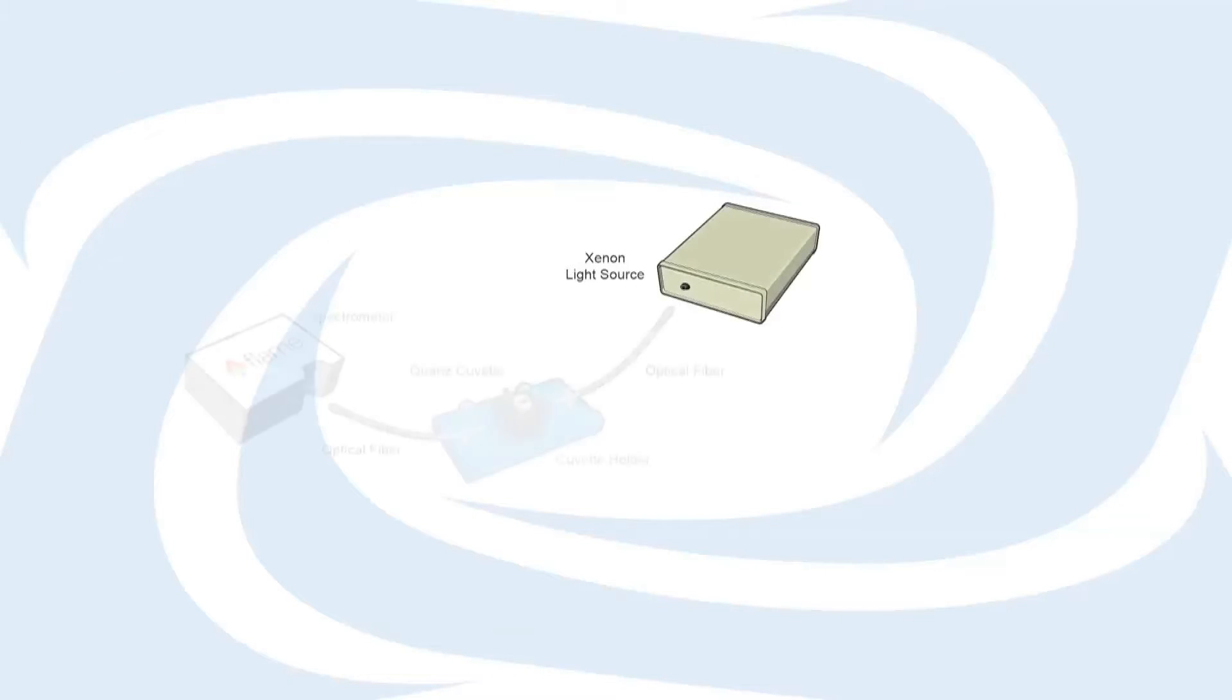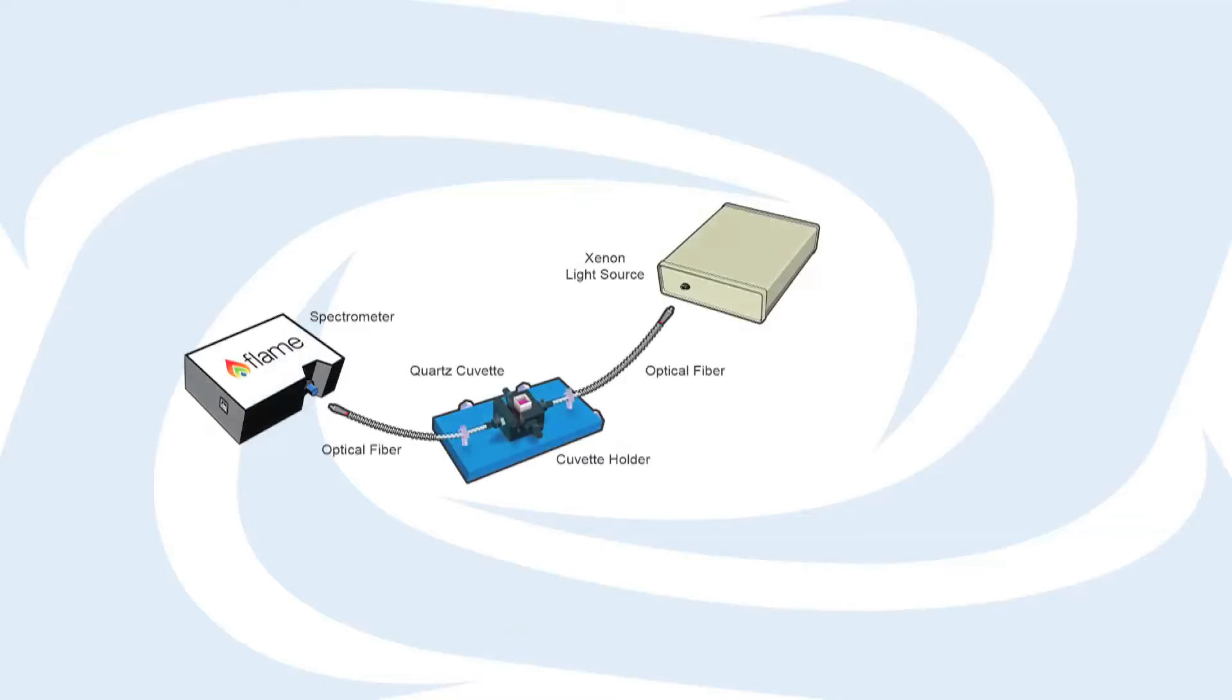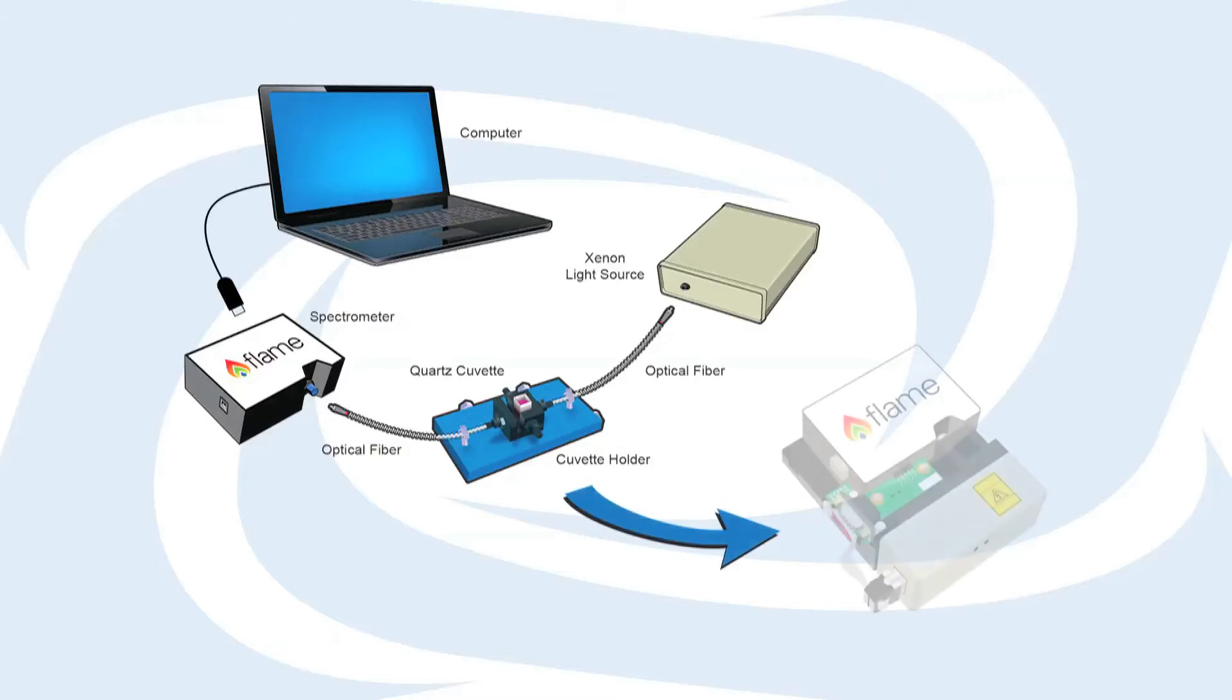The proof-of-concept system might use a xenon light source, cuvette holder and spectrometer with fibers for routing light, and a laptop for data communication and analysis.